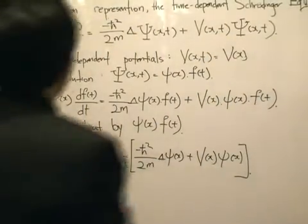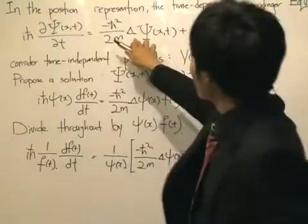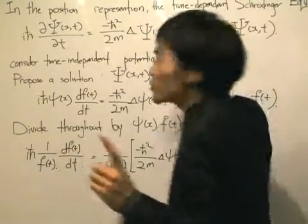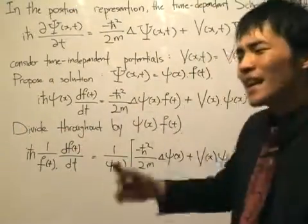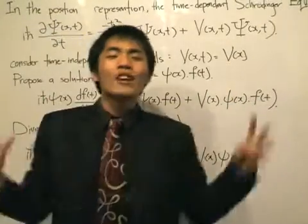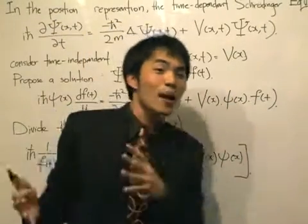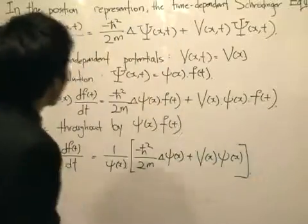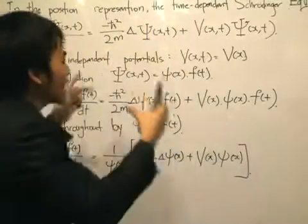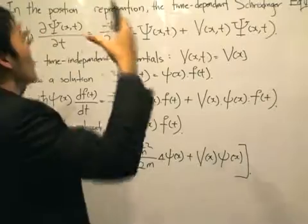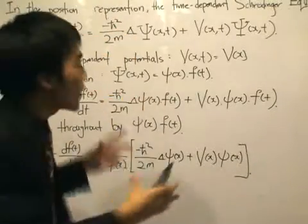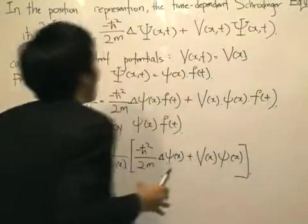I want to point out a few things. This triangle is the Laplacian operator, and this is also the potential operator. We have not specified what the potential is — we're dealing with particles moving in various potentials, which I'll describe as we move on. These are operators, not simply quantities. They are operators to be applied onto the wave function.